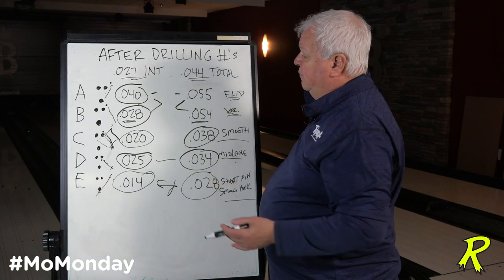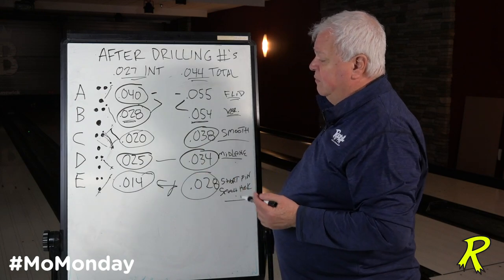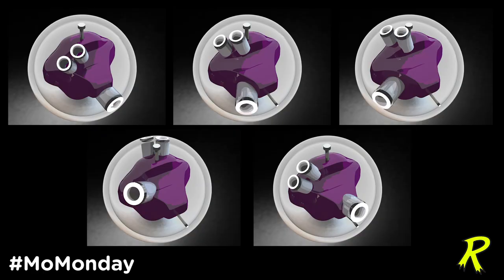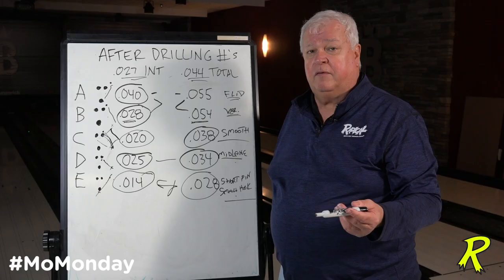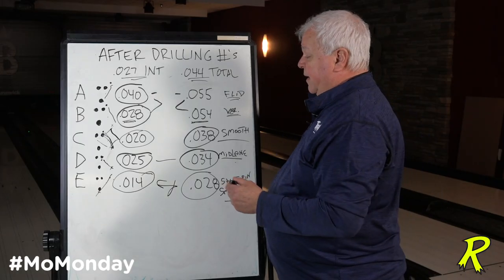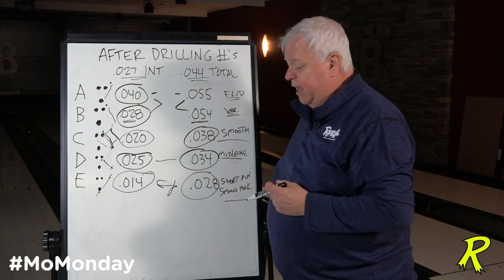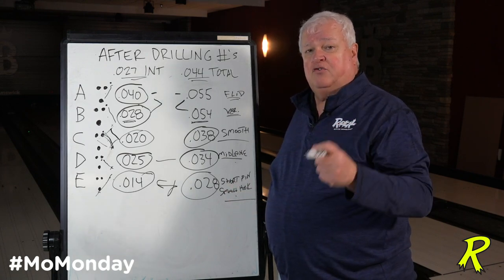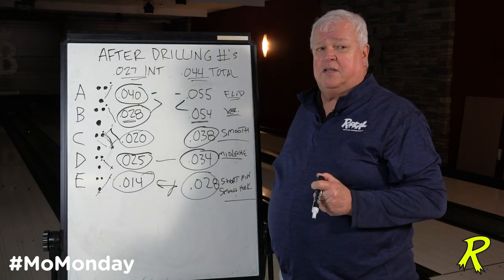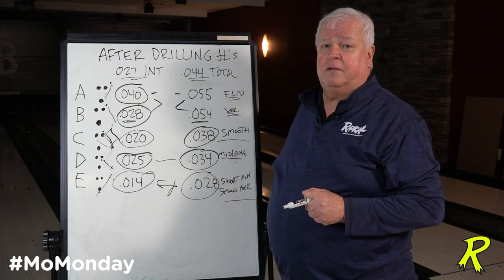As you can see, all of the drill patterns and where they remove mass from the core create different variances in the intermediate diff and the total diff. Let us know what you think about these ideas and we'll talk about it in depth. Drop your questions in the comments section.